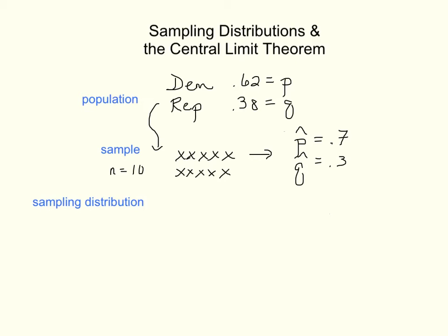Now, if we were to repeatedly do this sampling of size 10 over and over again, we could create a sampling distribution. And it would look something like this. First of all, we'll plot our 0.7 from our first sample.